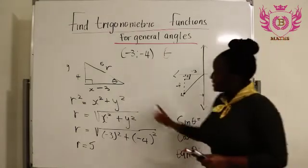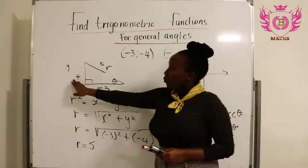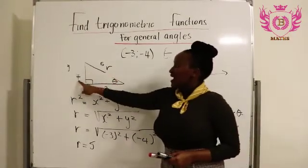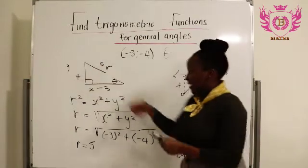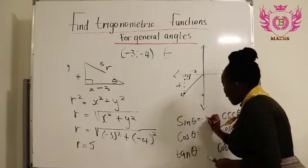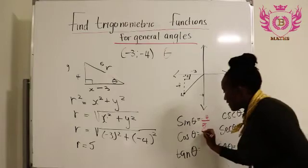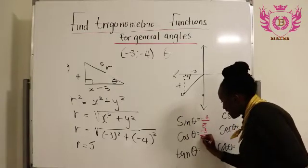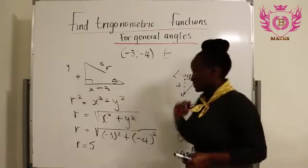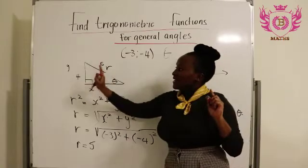Our sin θ will be given by our opposite which is y and the hypotenuse which is r. Our y is -4 and our r is 5. So our answer will be -4/5. And then we will have -3/5 for our cos which is adjacent divided by the hypotenuse. And then our tan is the opposite divided by the adjacent.